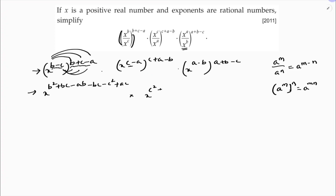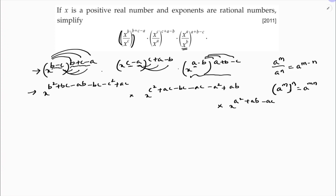Into x power — take c and multiply for all: c squared plus ac minus bc; then take minus a and multiply for all three terms: minus ac minus ab plus bc. Now take minus b and multiply for all three terms: minus ab minus b squared plus bc.